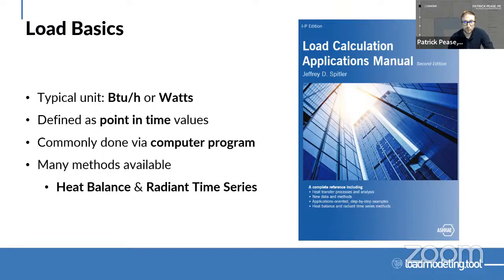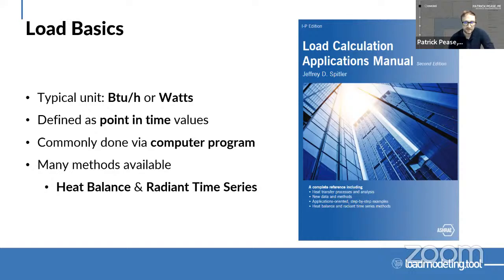These calculations are typically done with a computer program. There are means to do it by hand — we had to calculate loads far before computers — but I certainly wouldn't recommend that today; they are time-consuming and very difficult to do at scale. There are many methods available: heat balance and radiant time series are by far the top two. You can see these in many calculation programs, and even in ASHRAE Fundamentals they discuss the various differences. But they all essentially get you to a similar answer: how much heat is in my space and what do I need to deliver to counteract it?